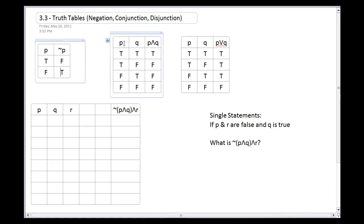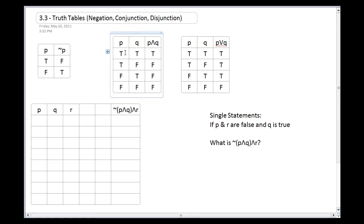For conjunction, we use the word 'and' — or it could be 'but' or any joining word. To build up the left side, I have both the P statement and the Q statement. Because I have two statements, I want every possibility: true/true, true/false, false/true, and false/false. This gives me every possible combination of P and Q.